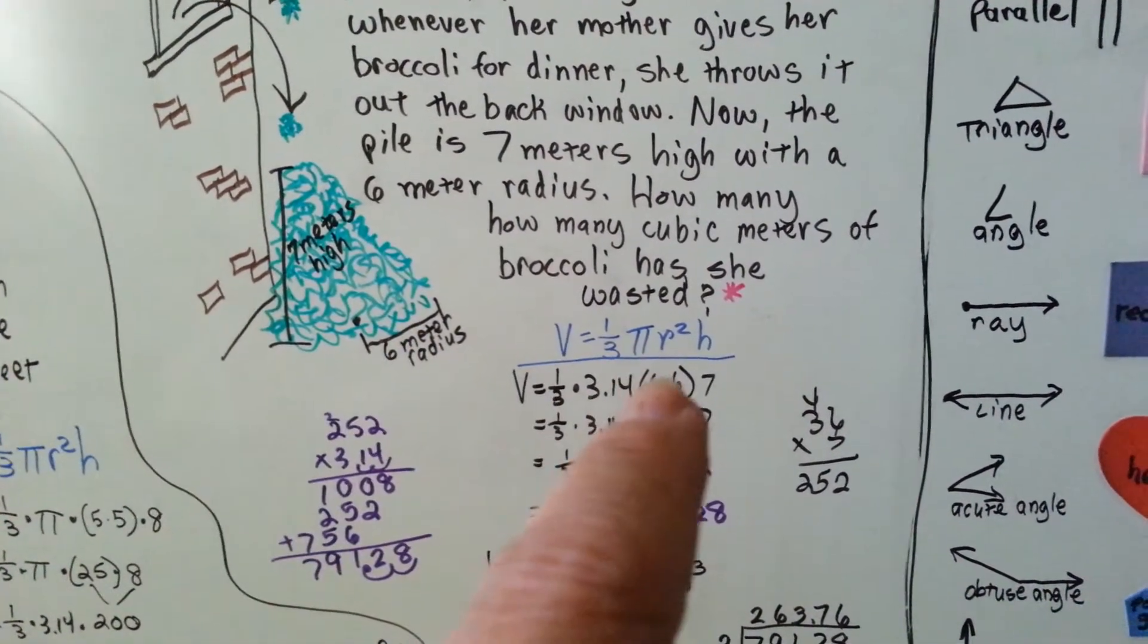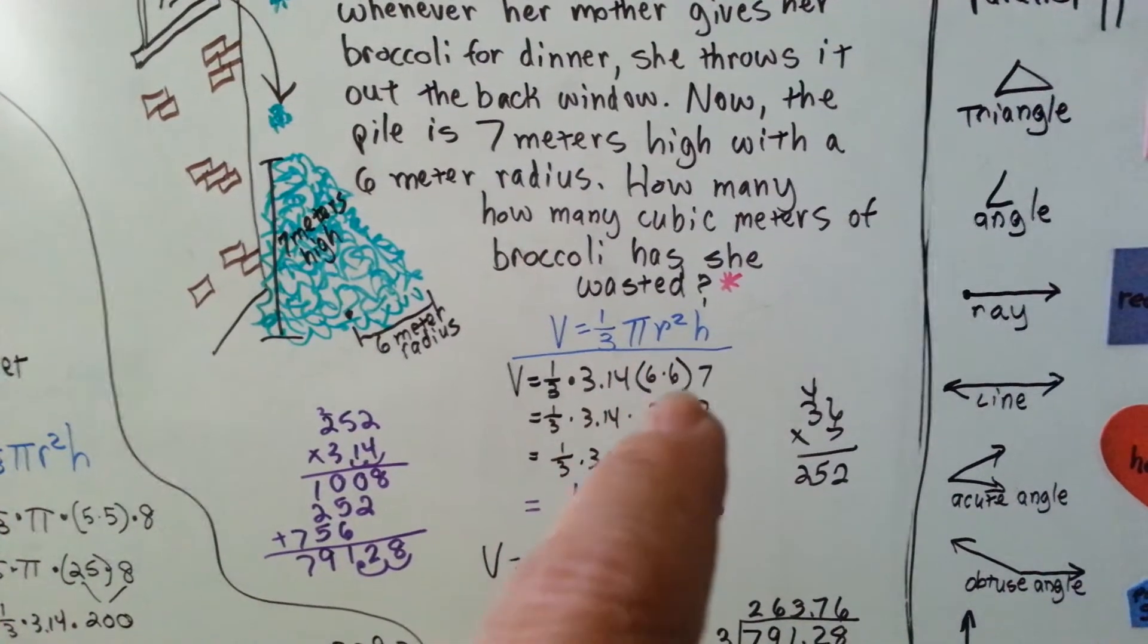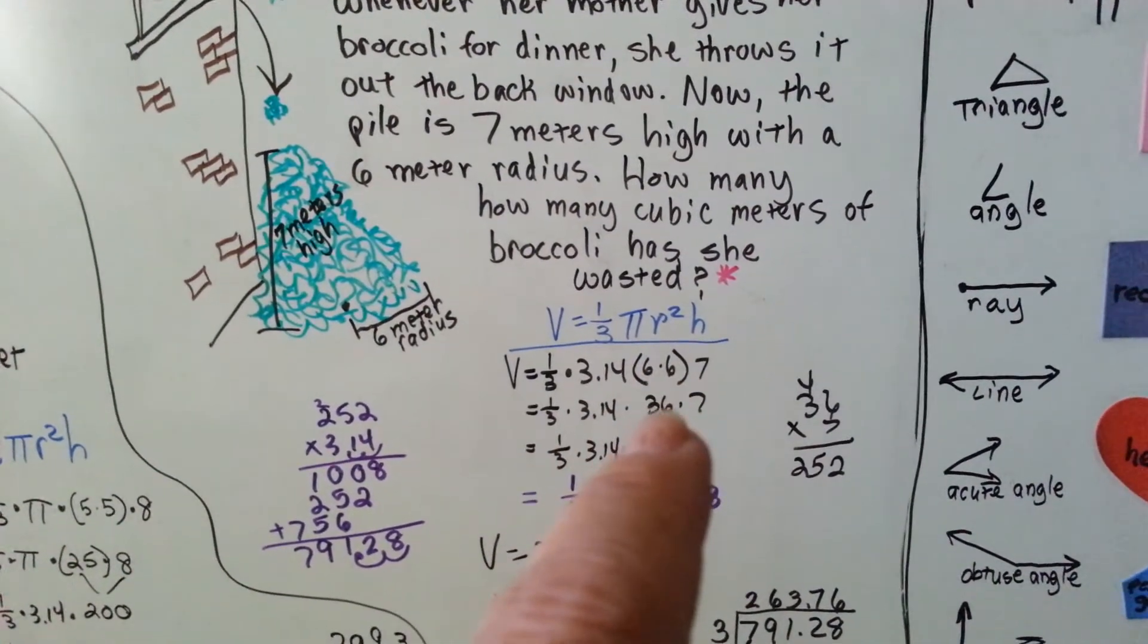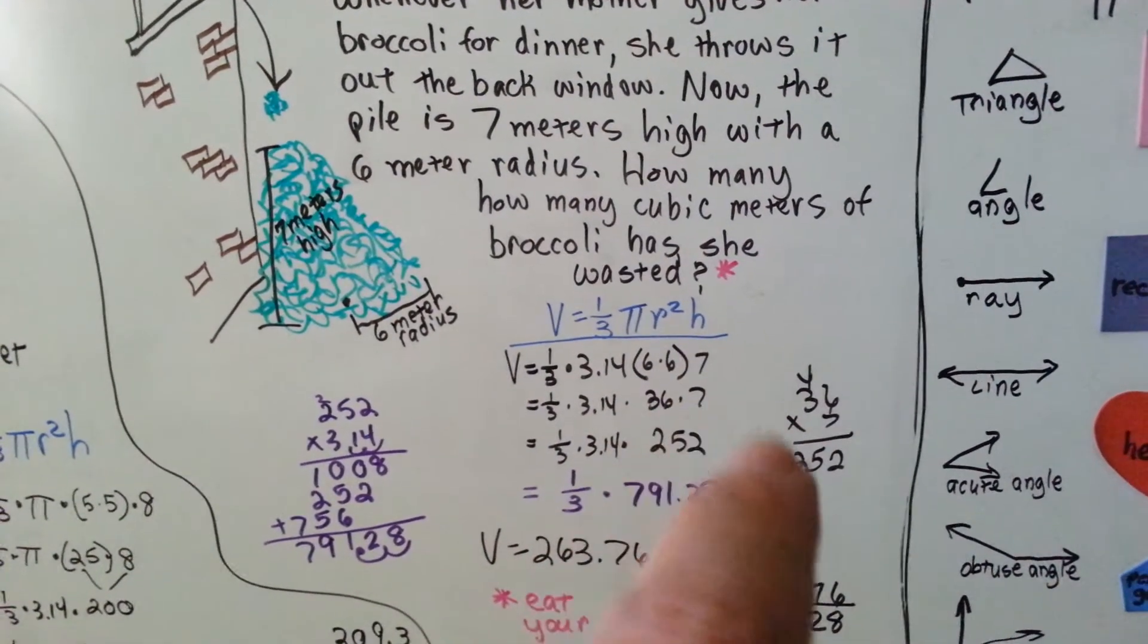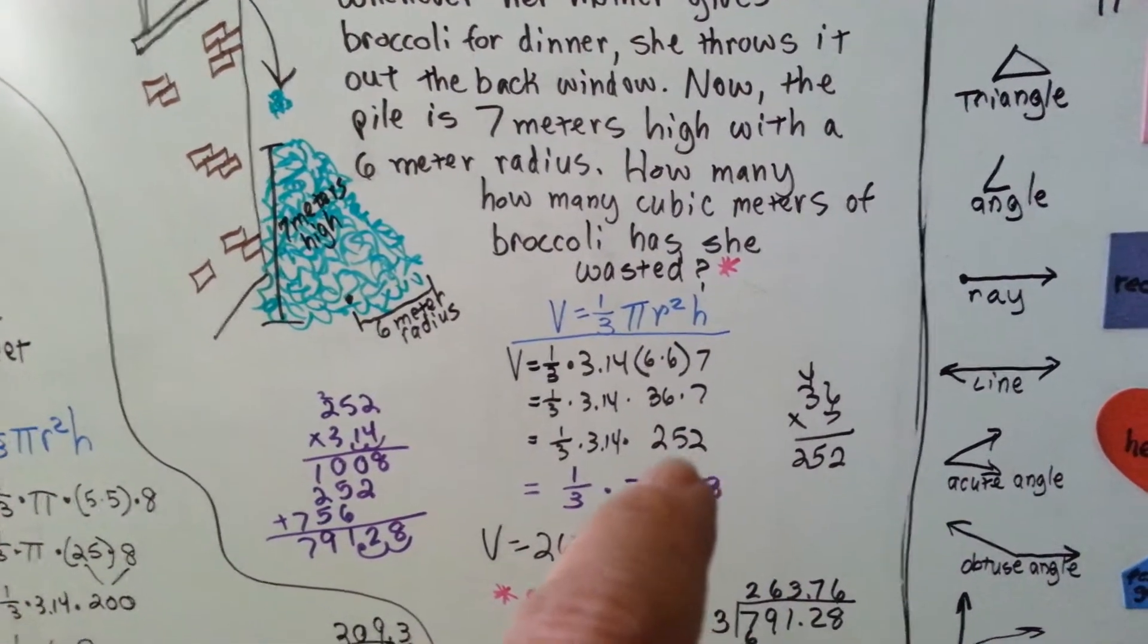And the radius is 6, so we do 6 times 6 for the radius squared here. 6 times 6 is 36. We need to multiply that by 7. Here we go, right here. It's 252.